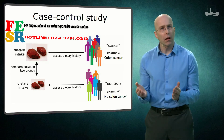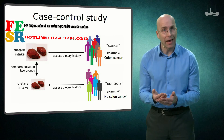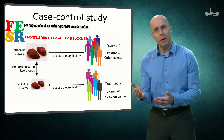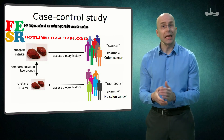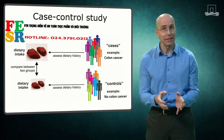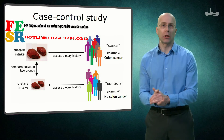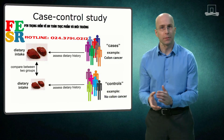Putting this together, we can conclude that in order to avoid these biases, it's best to find the control subjects in the same hospitals as the cases and make sure they have a similar social background.